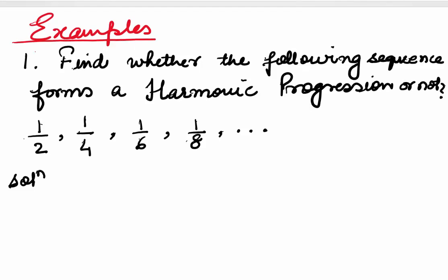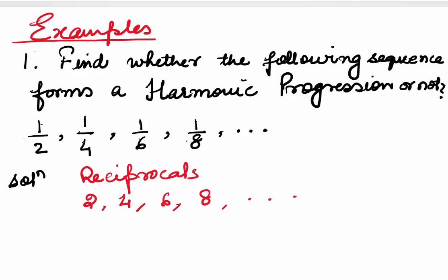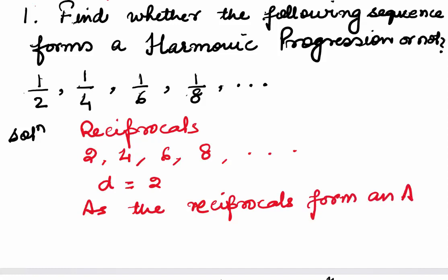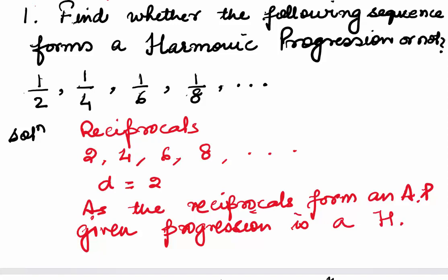On to the first example. We are asked to find whether the progression 1/2, 1/4, 1/6, 1/8 forms a harmonic progression or not. The first thing we do is take the reciprocals of all the terms, which gives us 2, 4, 6, 8. You see that this is an arithmetic progression with common difference 2. As the reciprocals form an AP, the given progression is a harmonic progression.